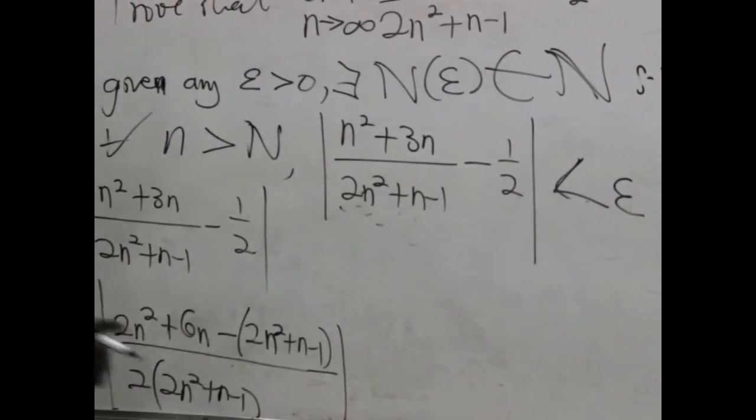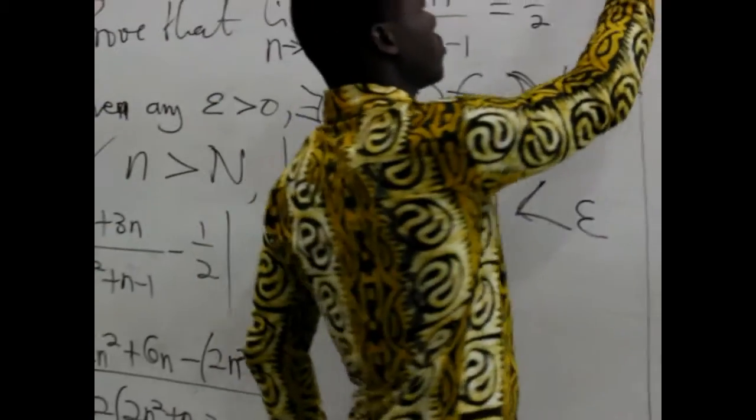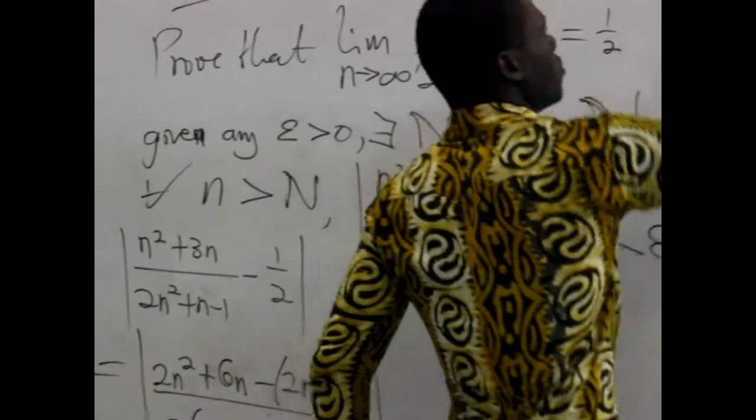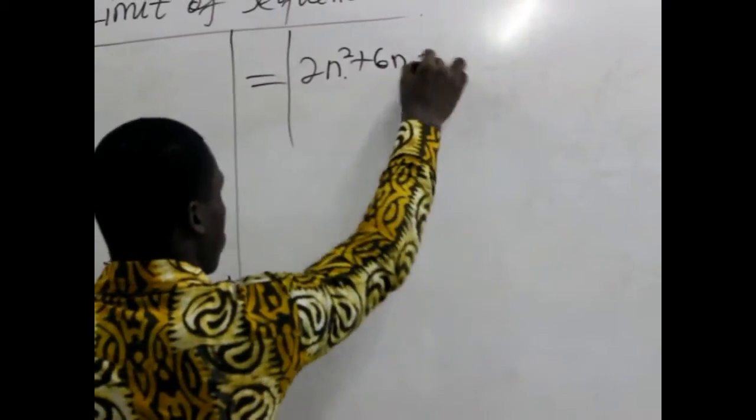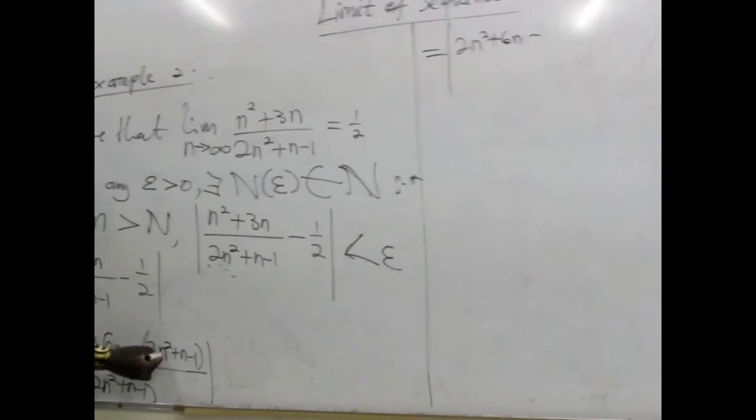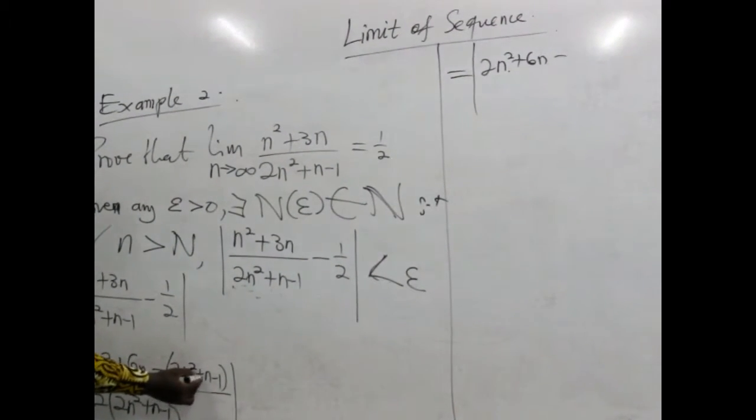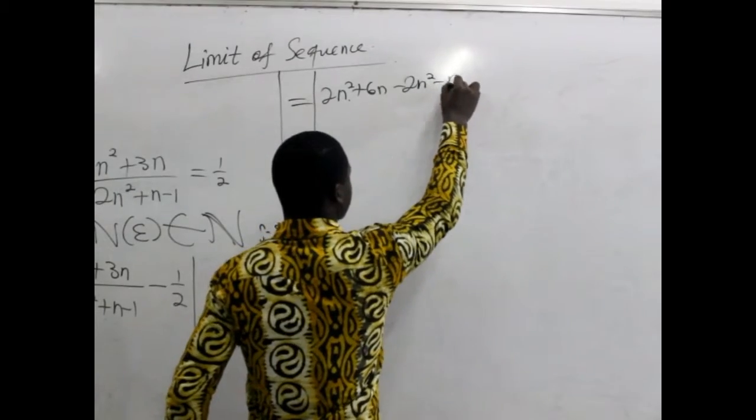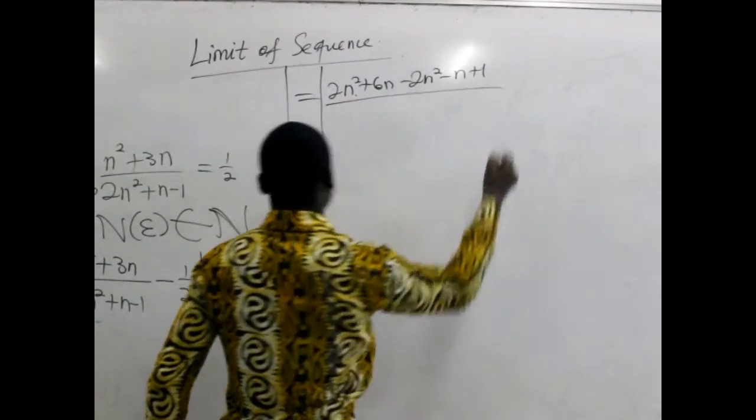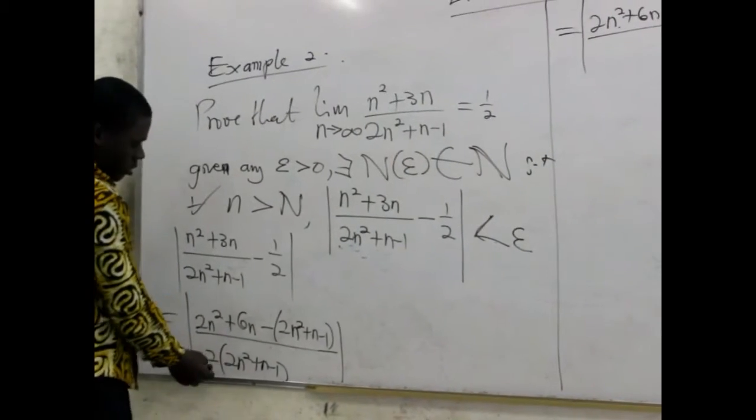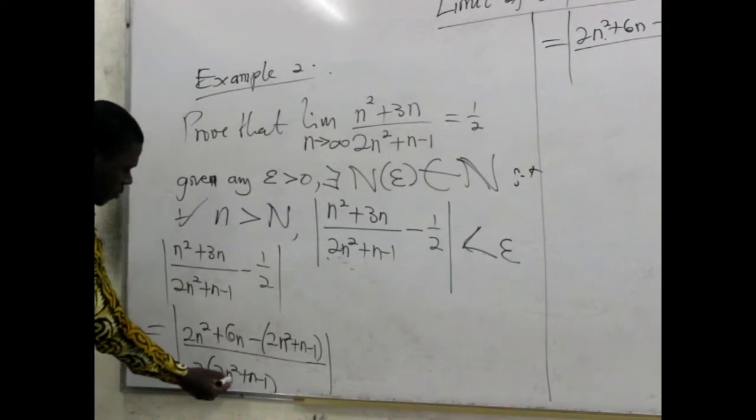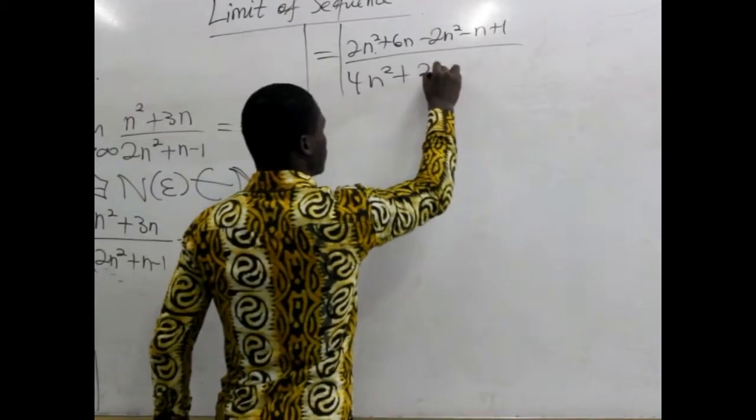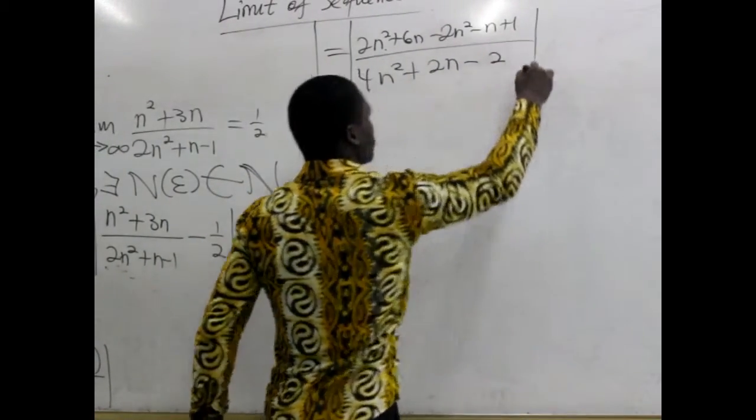Whatever we have now is actually equal to, we have 2n squared plus 6n. So minus, we have minus 2n squared, and then we have minus n plus 1. Then divided by, we multiply this, we have 4n squared, 4n squared plus 2n minus 2. That's what we have now.